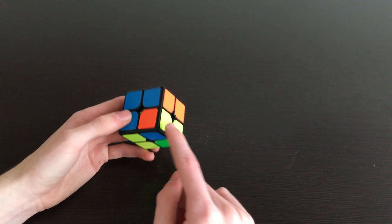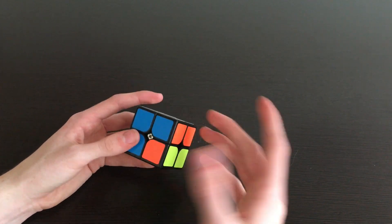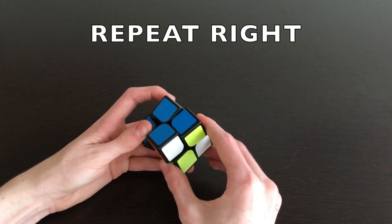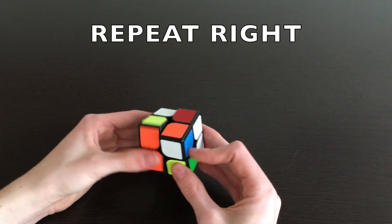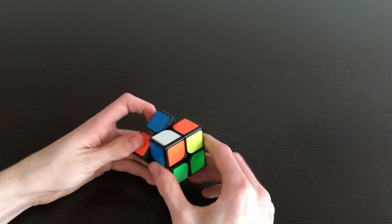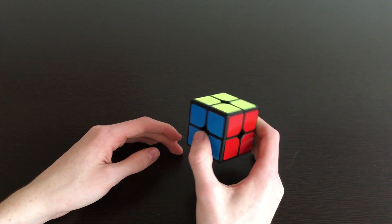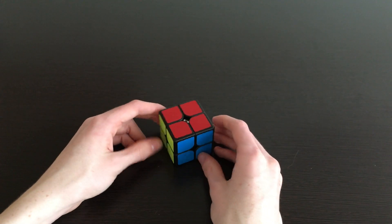And then all we have to do is just correctly position these last corners by continuously doing the right algorithm. And there you go, the puzzle is solved. So as you can see it's actually not that hard when you already know how to solve a 3x3.